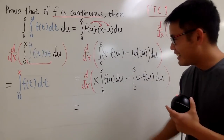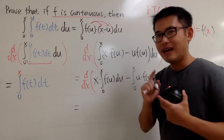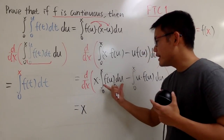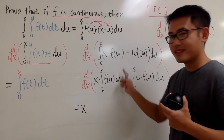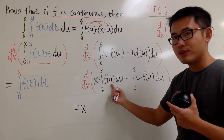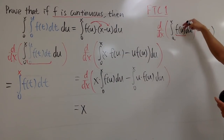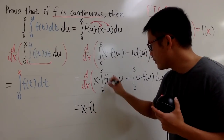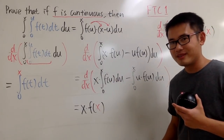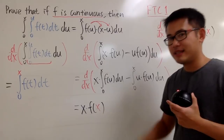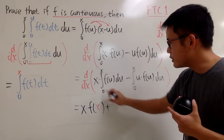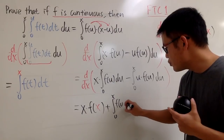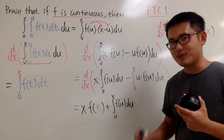Now let's go ahead and differentiate this. This is x times a function in terms of x, therefore we have to use the product rule. I will keep the first function as it is and differentiate the second function. How do we differentiate the integral? By FTC Part 1, all we do is plug x into the input u, giving f of x — so no more integral. That's the derivative of the integral part. Now I add the second function, which is the integral from 0 to x of f of u du, times the derivative of x, which is nicely equal to 1.